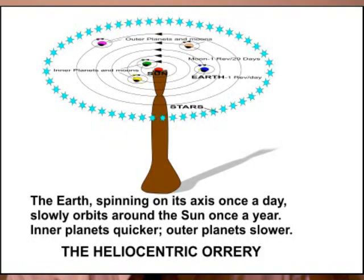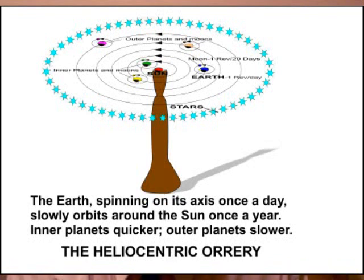Many years ago they used to make, and I think they may still make them, mechanical models of the planetary system in which they would put the Sun on a pedestal, and with long arms coming out from that central pedestal they would have the different planets at different distances from the Sun. Those long arms would rotate very slowly — the near ones rotating faster and the outer ones rotating slower — and from each of those planets would be a very small ball representing the Moon or moons going around that particular planet. They are called orreries, and these mechanical contrivances were quite useful models for people to understand the planetary system.